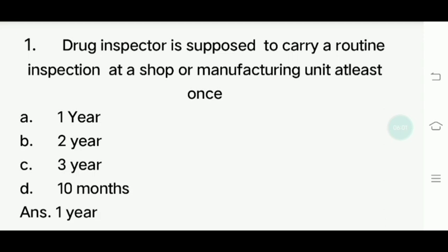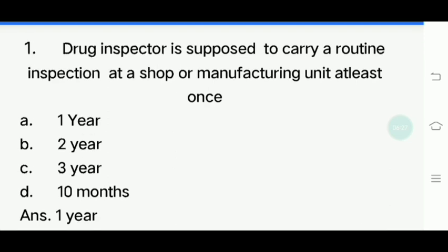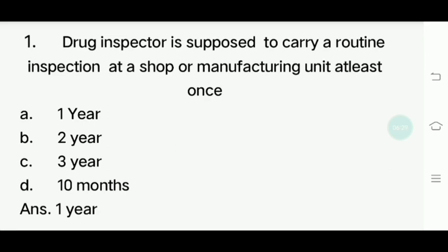First question: Drug inspector is supposed to carry a routine inspection at a shop or manufacturing unit at least once - how often? Options: one year, two year, three year, ten months. The answer is one year. The drug inspector will visit at least once per year.